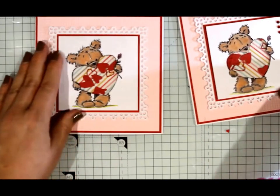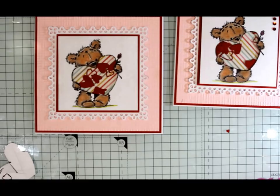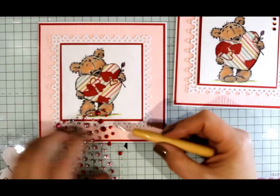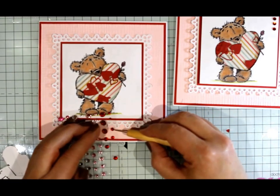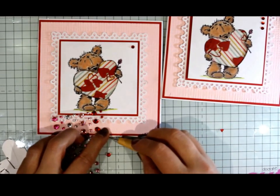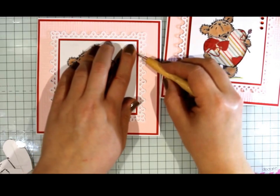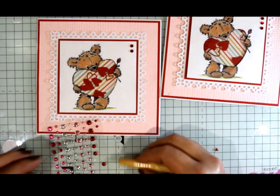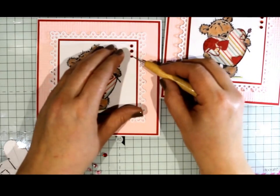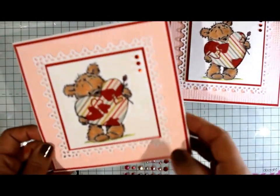And then finish off by adding these three little gems here. I have to do two medium and one small, one seems to have disappeared. And that's your finished card.